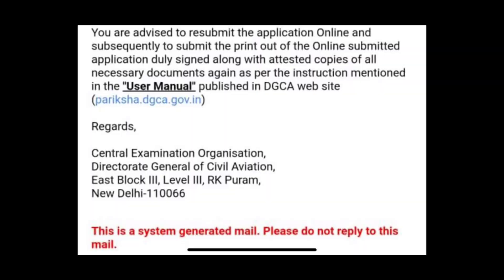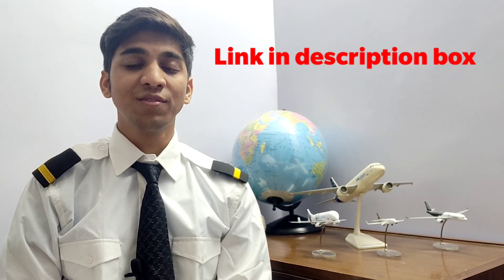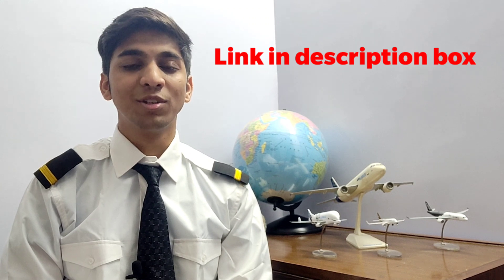At the end of the email, you can find what next steps you need to take. You are advised to resubmit the application online and subsequently submit the printout of the online submitted application, duly signed along with attested copies of all necessary documents, as per instructions mentioned in the user manual published on the DGCA website. The old email ID will probably not work, so you'll have to re-register as a new candidate. Details for that you can find in the description box below.